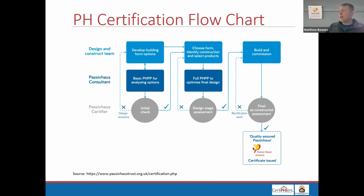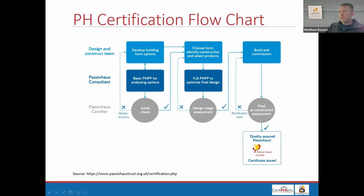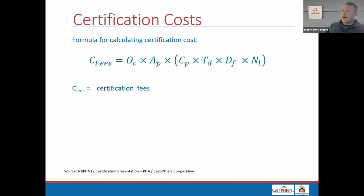By engaging the certifier early in the process, the certifier can notify the team if there are extra photos they'll want. A certifier sends a standard list of photos of things they need to see during construction, but if there are some unusual details, there may be extra photos needed. Engaging the certifier early allows them to provide that feedback. Now — what does all of this cost?